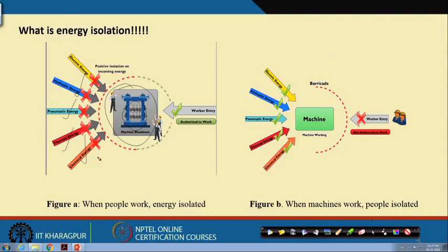So the primary requirement for occupational safety and health is: when people are going to work on machines, processes, or equipment which have got energy, that energy has to be made zero. This is one scenario.